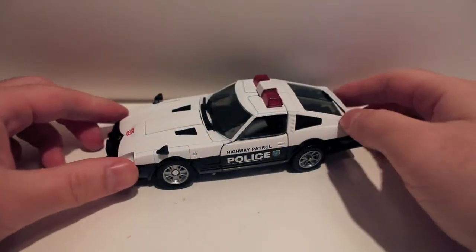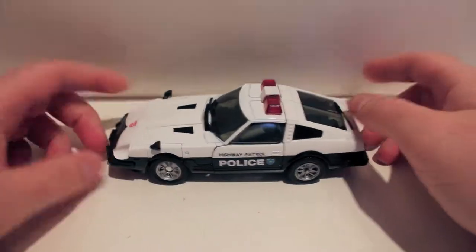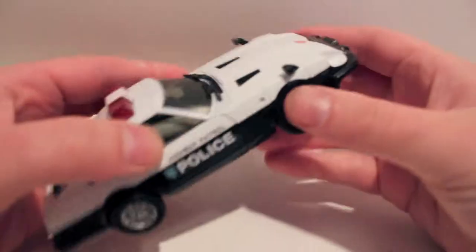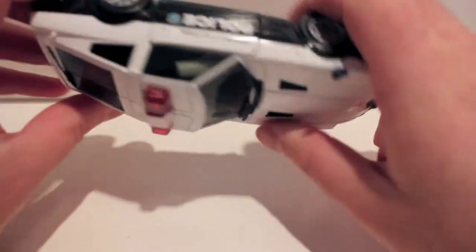Alright, another video review for you. This time we're taking a look at Takara's newest Masterpiece, Masterpiece 17 Prowl. You can see he is a Datsun Fairlady Z 280. You can't see the missile launchers through the window, just a little weird but whatever.